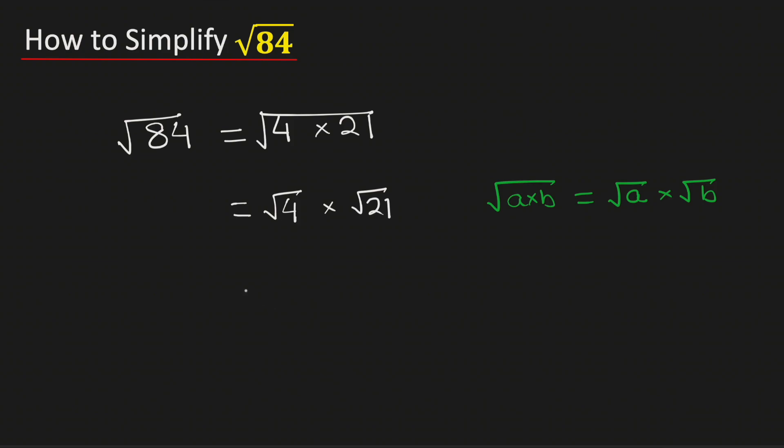Now we know that root 4 is equal to 2 and root 21 cannot be simplified further. Multiplying we get 2 root 21.